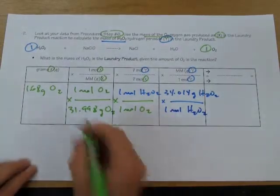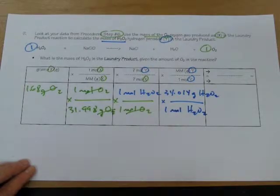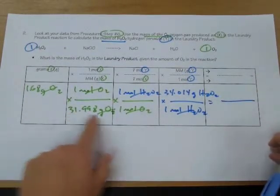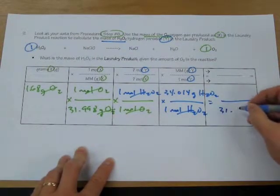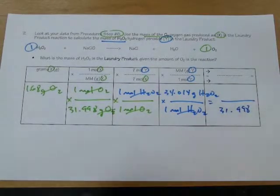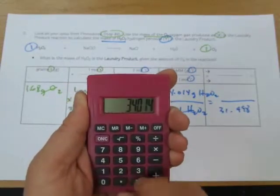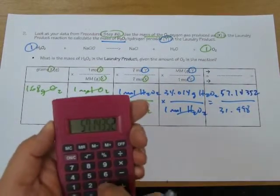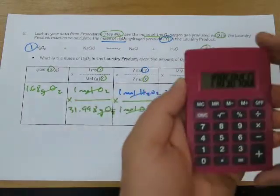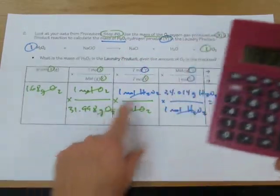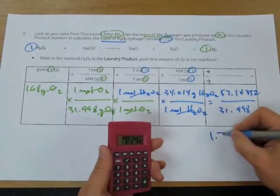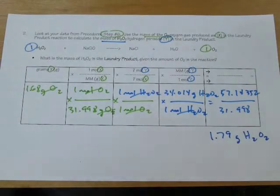Units cancel: grams of oxygen → moles of oxygen → moles of hydrogen peroxide → grams of hydrogen peroxide. Multiplying across the bottom gives 31.998. Multiplying across the top: 1.68 × 1 × 1 × 34.014 = 57.14352. Dividing and rounding to three significant figures gives 1.79 grams of hydrogen peroxide — that's how much is in the laundry product.